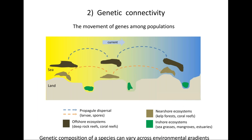The second form of ecological spatial connectivity is genetic connectivity — the movement of genes among discrete populations. Across a species' range, environmental conditions vary; for example, water temperature along latitudinal gradients causes differences in selection for different gene types, leading to variation in genetic composition across those gradients. This is accentuated by barriers to larval dispersal like headlands or oceanographic features that reduce gene flow from one population to another. It's important to recognize that the genetic composition of a species can vary across its range.